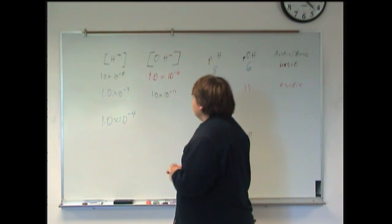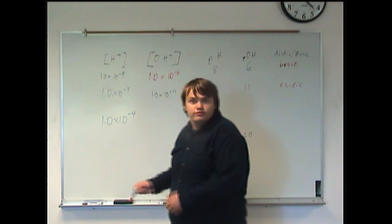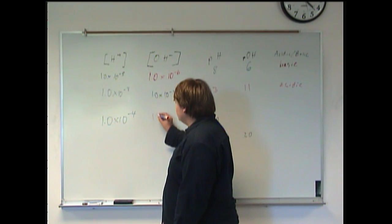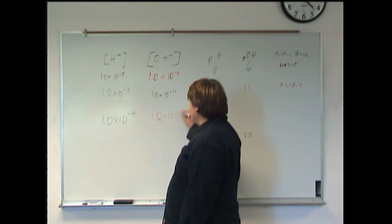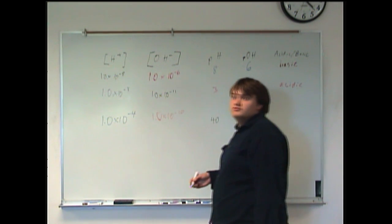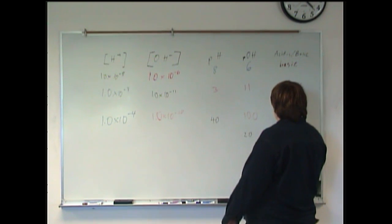And then from there, of course, we can figure out the OH concentration using formulas we already know. And that gets us 1 times 10 to the negative 10. Then 14 minus 4 is, of course, 10. And that, of course, is going to be acidic.